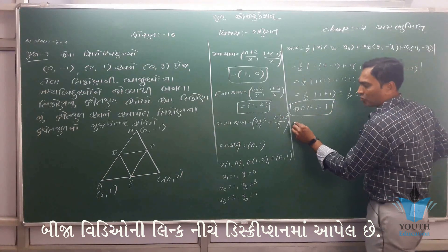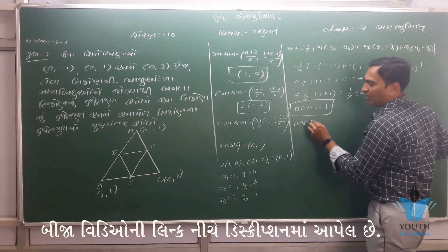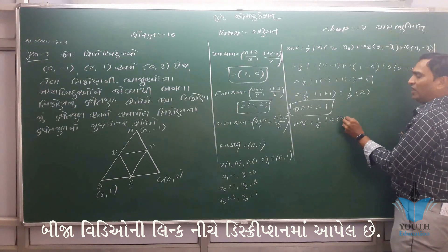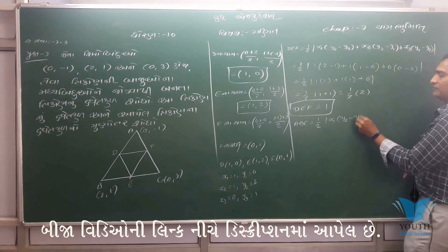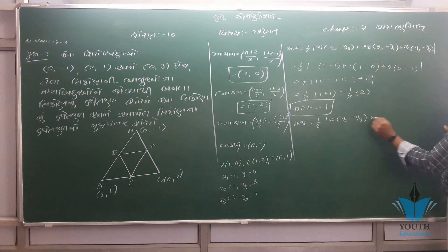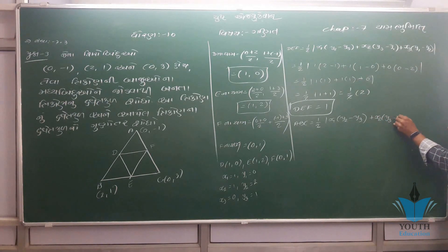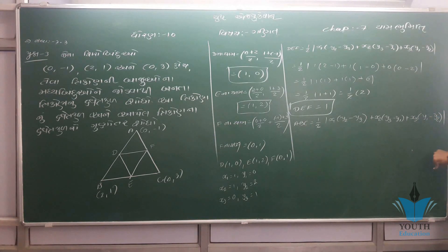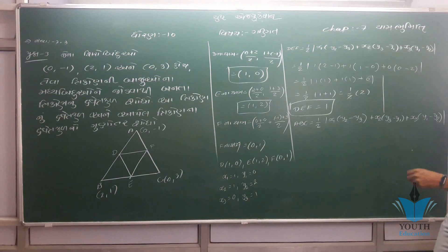Now, let's look at ABC. ABC area = (1/2) times x1 times (y2 minus y3) plus x2 times (y3 minus y1) plus x3 times (y1 minus y2). So let's look at ABC: x1, y1, x2, y2, x3, y3.